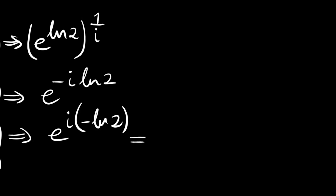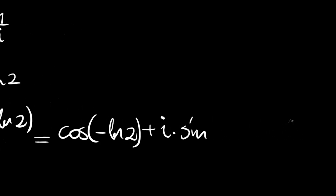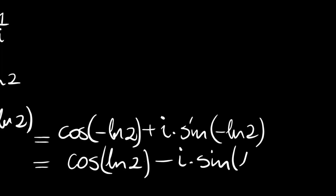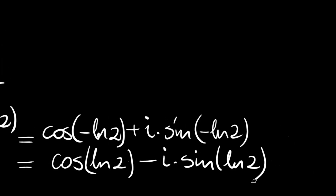By Euler's formula this is equal to cosine of negative ln 2 plus i times sine of negative ln 2. Since cosine is an even function, we have cosine of ln 2, and since sine is an odd function, we have negative i times sine of ln 2. This is the principal value for the ith root of 2. Actually, we have plus 2 pi n inside cosine and sine.